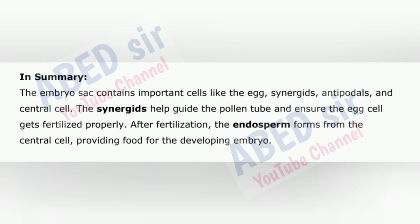In summary, the embryo sac contains important cells like the egg, synergids, antipodals, and central cell. The synergids help guide the pollen tube and ensure the egg cell gets fertilized properly. After fertilization, the endosperm forms from the central cell, providing food for the developing embryo.